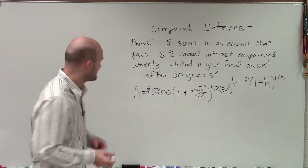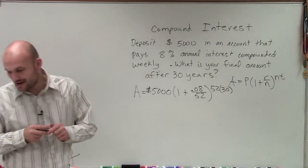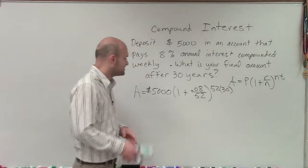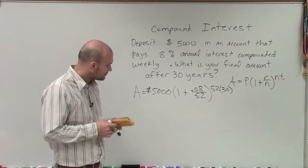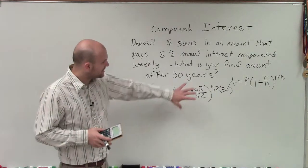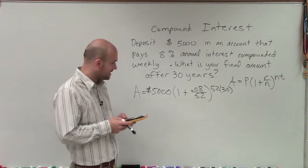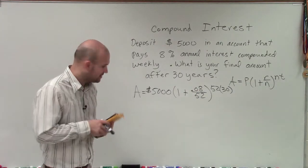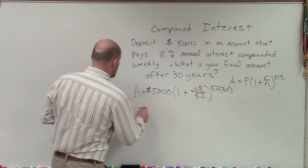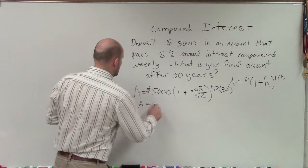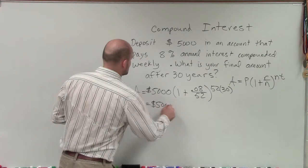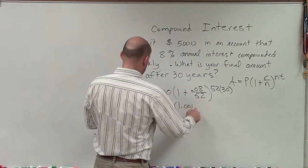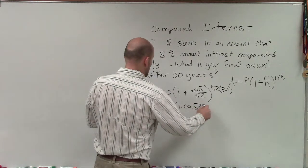It's not a bad gig if you can find it. So now we need to go and figure out what are going to be the values for this formula. To do that, the first thing I need to do is simplify my parentheses. So I take .08 divided by 52, and then I add that to 1. So therefore, now I have A equals $5,000 times 1.001538.